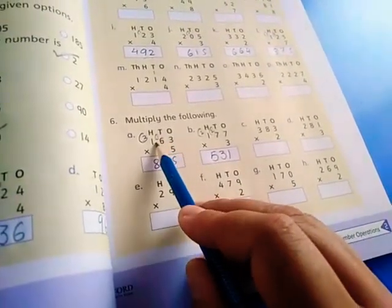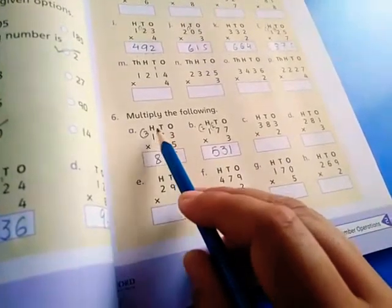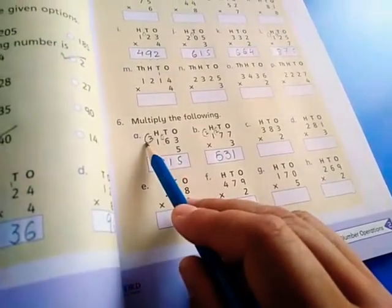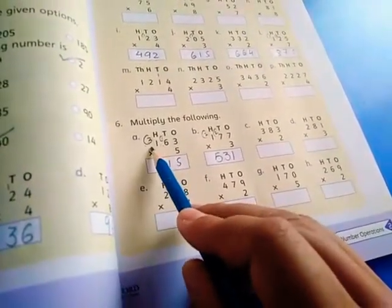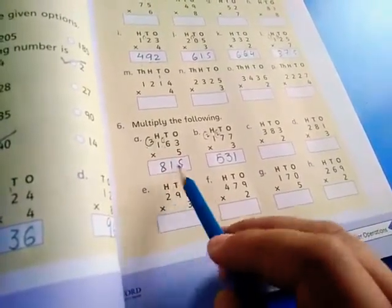Taking carry to the next number. 5 sixes are 30. 30 plus 1 is 31. 5 ones are 5 plus 3 is 8, giving 815.